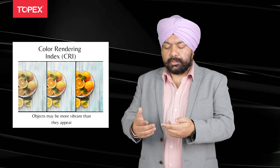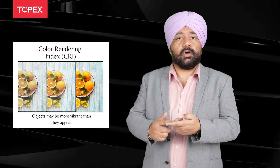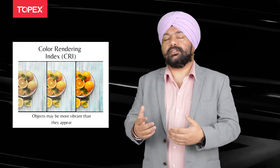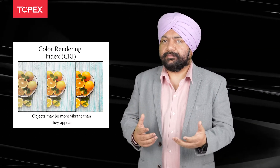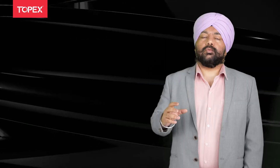Higher CRI means the product will look natural under the light. So if you are a user in a mall or a shopping area where people need to compare colors — for example, a shop for clothes or fruits — higher CRI products will be better. Here we can see the effect of different CRI values.